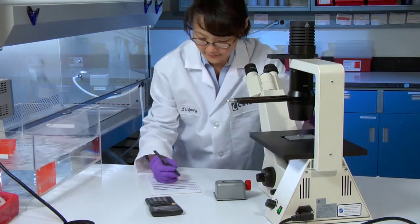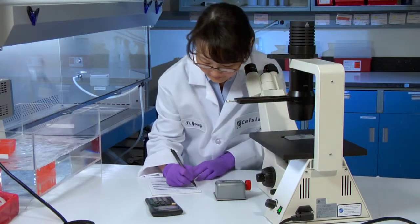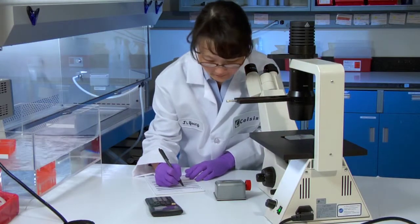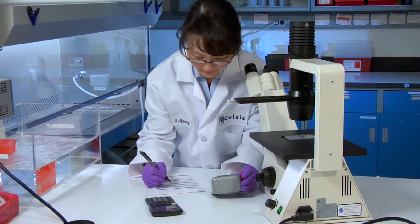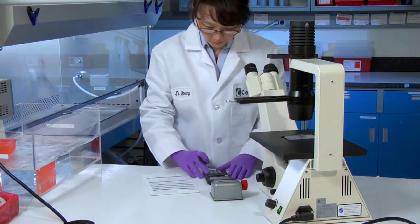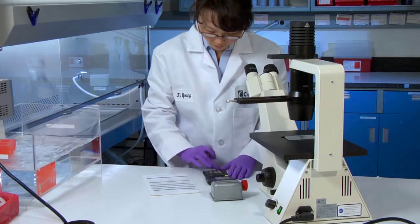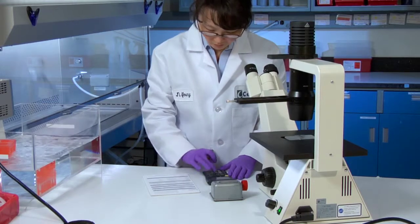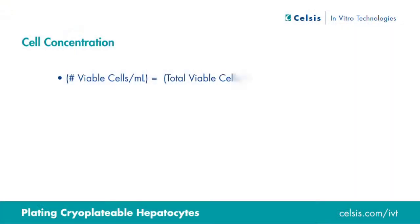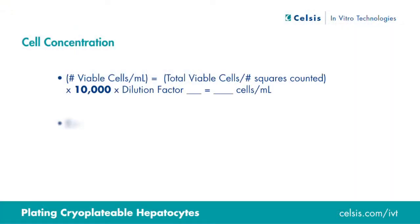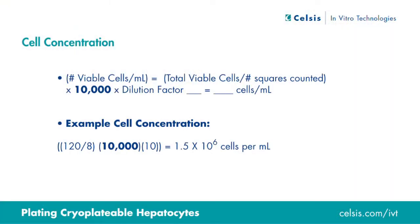With cell counting completed, it is time to determine your total cell concentration. For this demonstration, we will round the numbers to the tenths place. The cell concentration is calculated by taking the total number of viable cells and dividing by the total number of squares counted. This number is multiplied by 10,000, which represents the hemocytometer conversion factor for the volume in one quadrant square, which is 0.1 microliters.